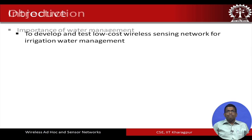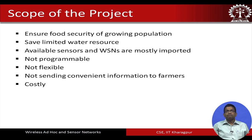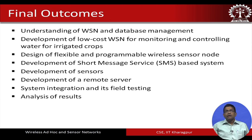The overall objective of this project was to develop and test a low cost wireless sensing network for irrigation water management. We wanted to come up with a sensor network solution that would be flexible, programmable, convenient for farmers to use, and not too costly. The outcome was a system that can monitor and control the water level of irrigated crops — practically targeting paddy crops, though it can be scaled for other agricultural crops.